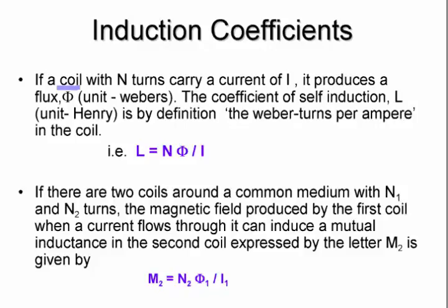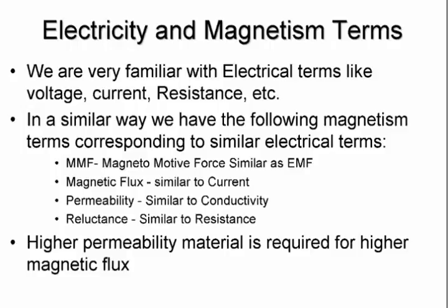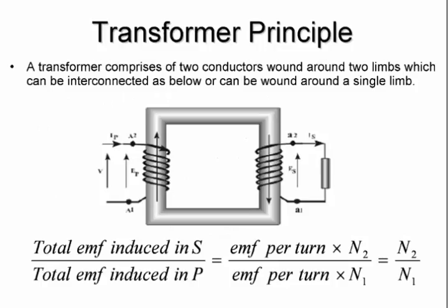If we have a coil with N turns carrying current I, it produces a certain flux, and the coefficient of that is self-inductance. When we have two coils around a common medium, the magnetic field produced by the first coil induces a mutual inductance in the second coil, expressed by the letter M. Just as in electrical terms we have voltage, current, and resistance, in magnetic circuits we have MMF (magnetomotive force) similar to EMF, magnetic flux similar to current, permeability similar to conductivity, and reluctance similar to resistance. Higher permeability material is required for higher magnetic flux — that's why we have special materials for our transformer.